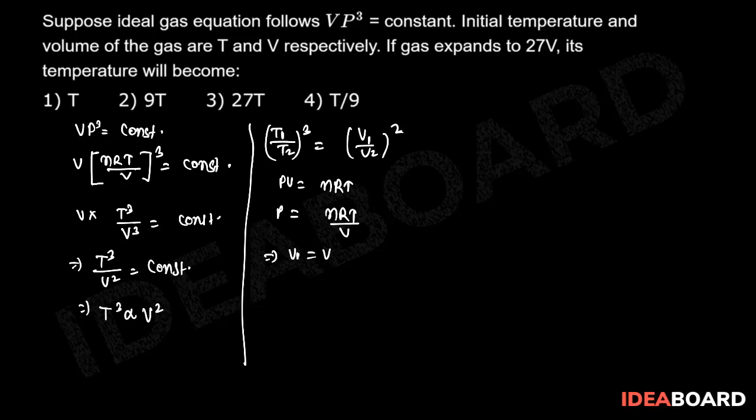If V₁ is equal to V and T₁ is equal to T, then V₂ is given in this question as 27V and T₂ is unknown to us. So we can directly apply this equation to get the solution.